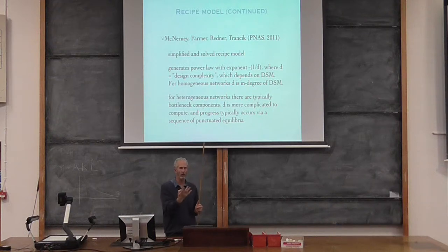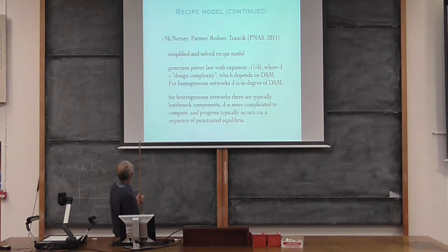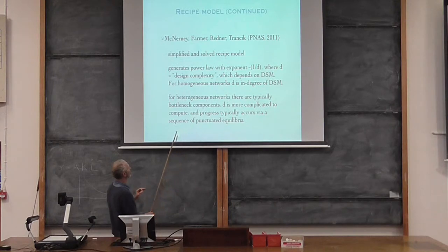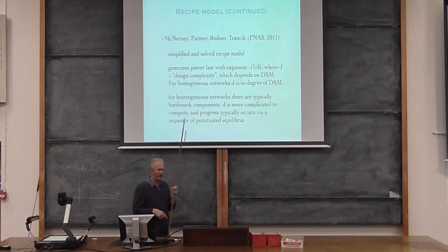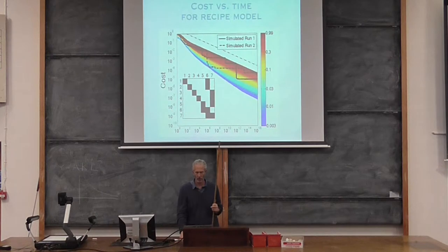Four, because there would be four interacting components in every case. But in fact, if you make up design structure matrices at random, what you find is they're typically bottleneck components, and D is heterogeneous and more complicated to compute, and progress occurs via a sequence of punctuated equilibrium.